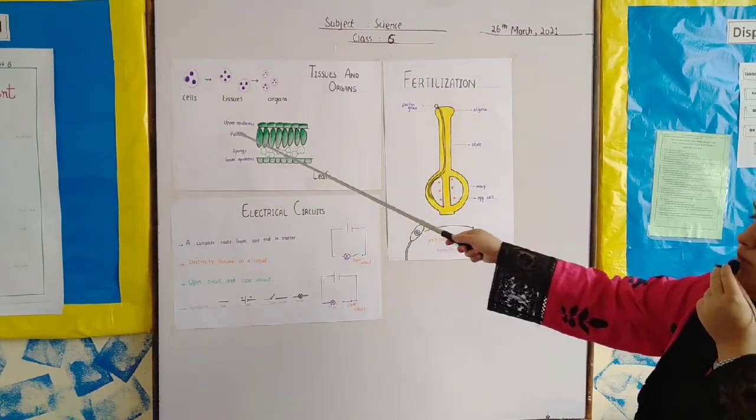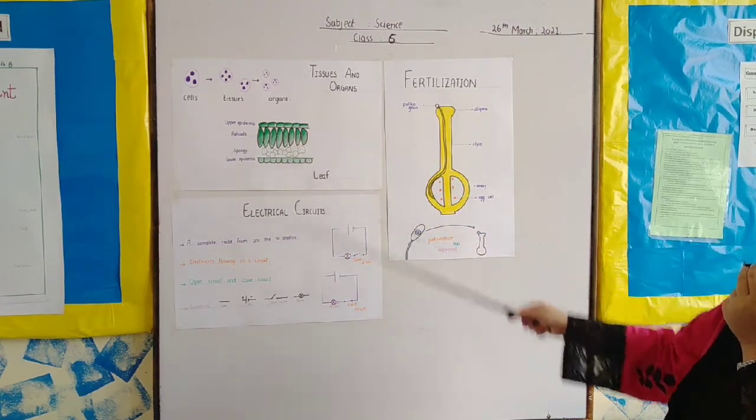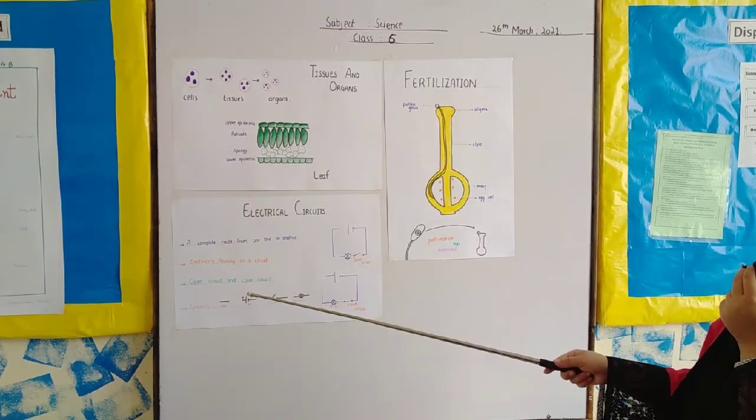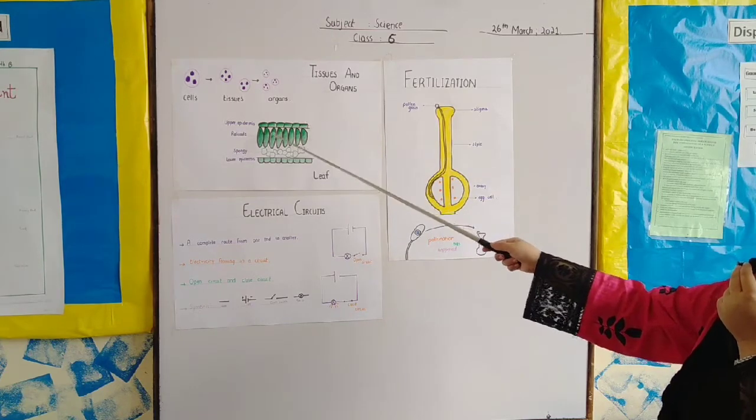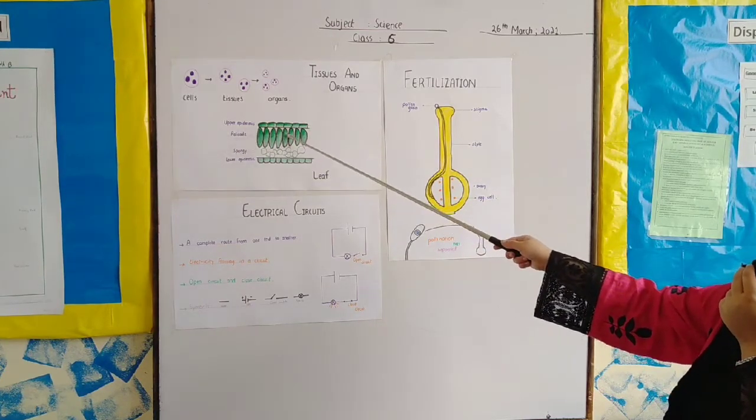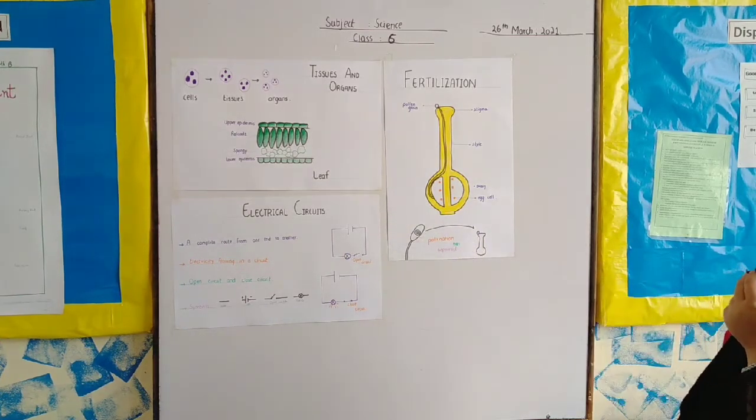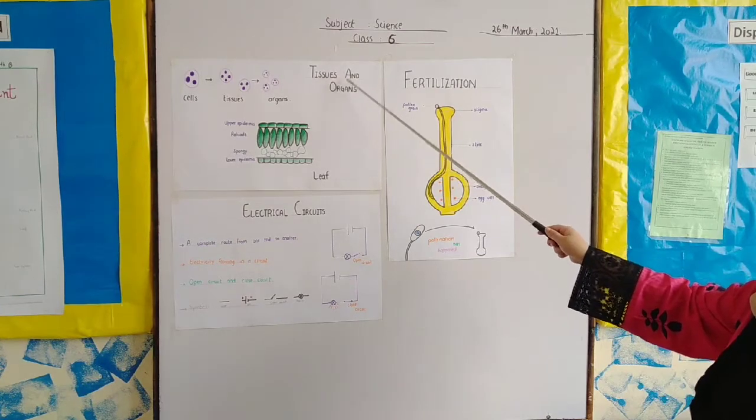Then it comes to palisade layer. The palisade layer is used to make food because it is underneath the epidermis layer, so it is very easy for it to catch light. Then there is spongy layer and then there is lower epidermis. So this was tissues and organs.